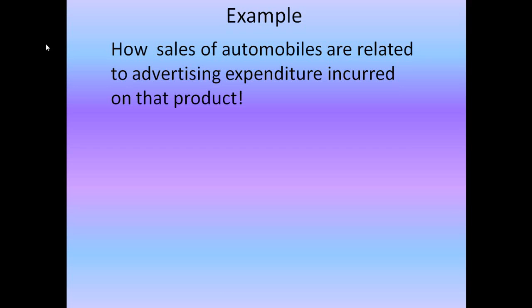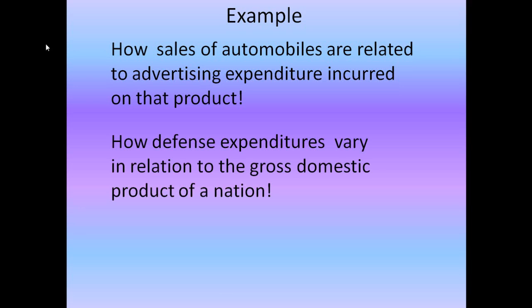Let's take another example. Let us suppose that we need to predict how defense expenditure varies in relation to the gross domestic product of a nation — that is, how defense expenditure depends on the GDP. So in this case the GDP would be the independent variable and defense expenditure would be dependent on GDP, so it would be the dependent variable.